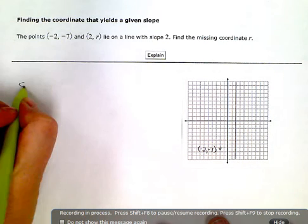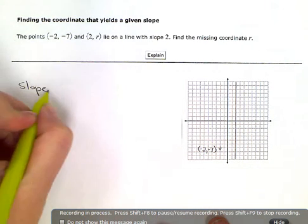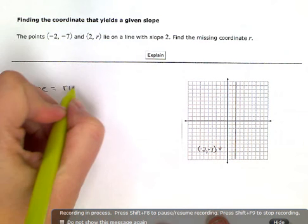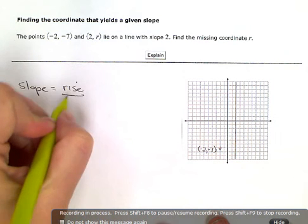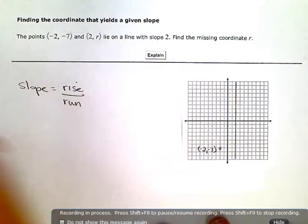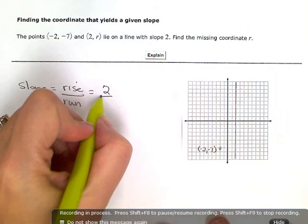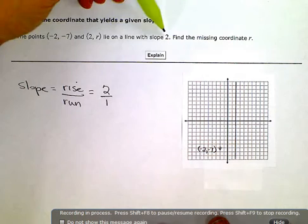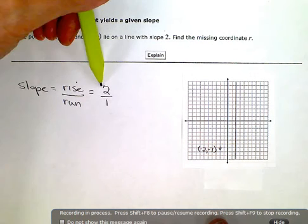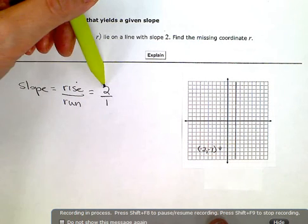Slope is rise over run. If that's 2, I need to make it a fraction. They're telling me my slope is 2. If I make it a fraction, then my rise is 2 and my run is 1.